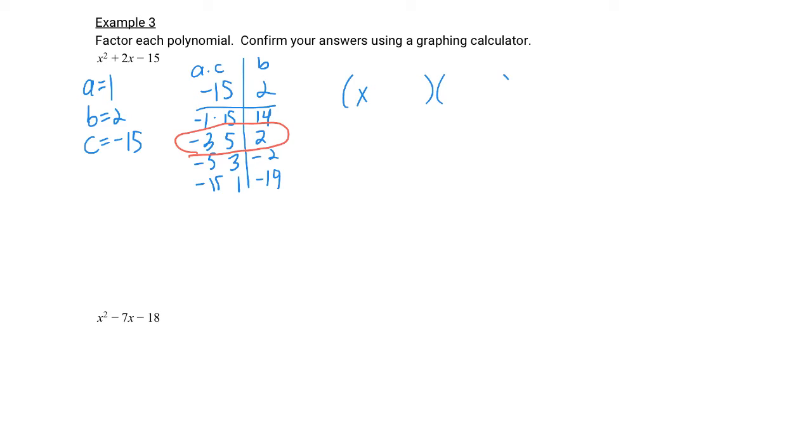Same thing we've been doing, two parentheses, x is in front, factors on the back. Let's check our work. x² + 5x - 3x - 15. Combine like terms and we did it.